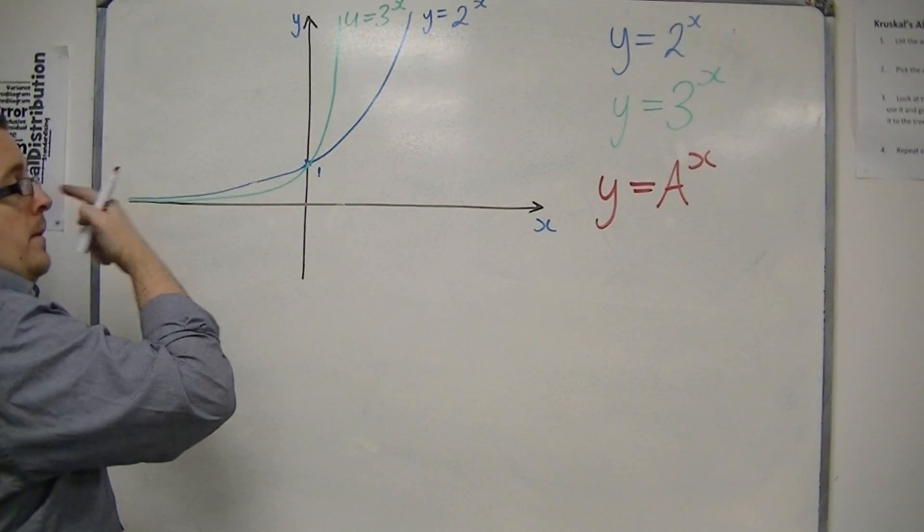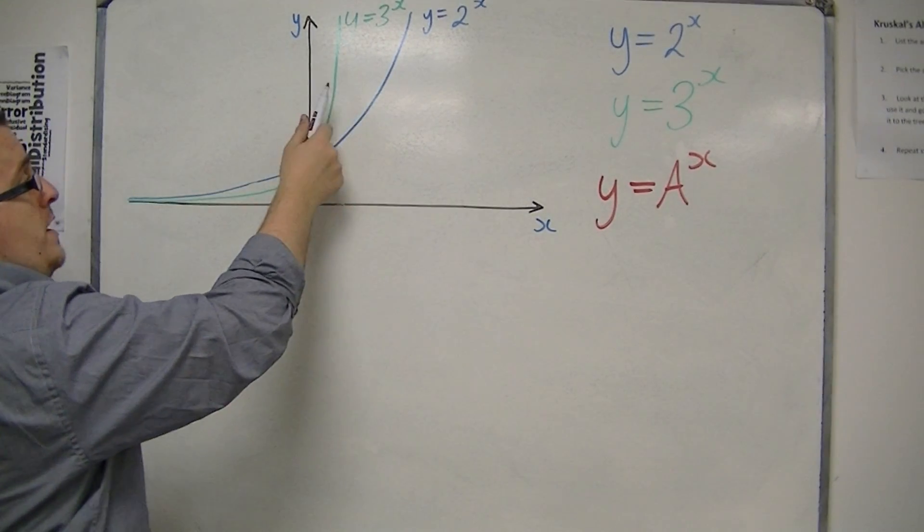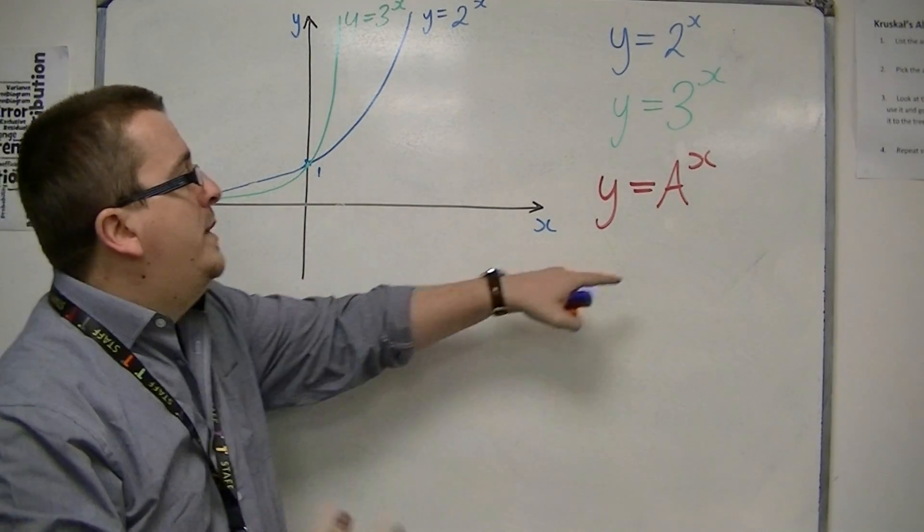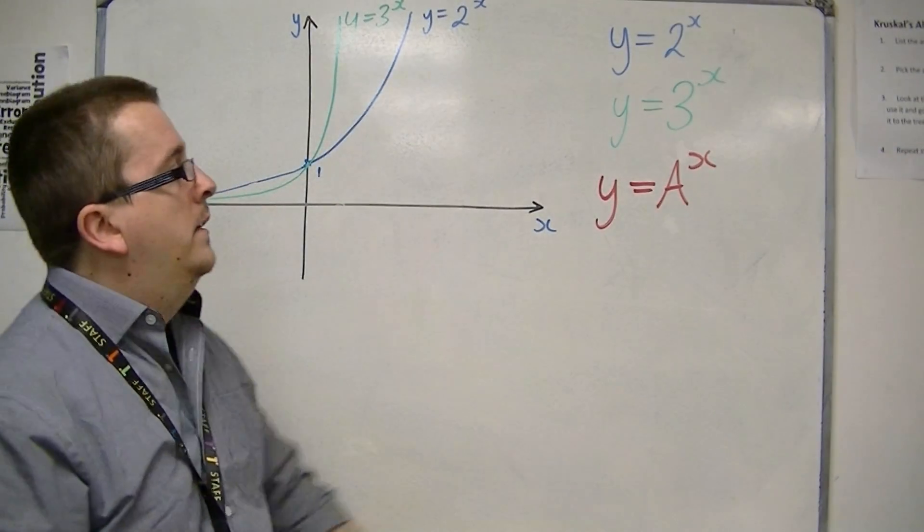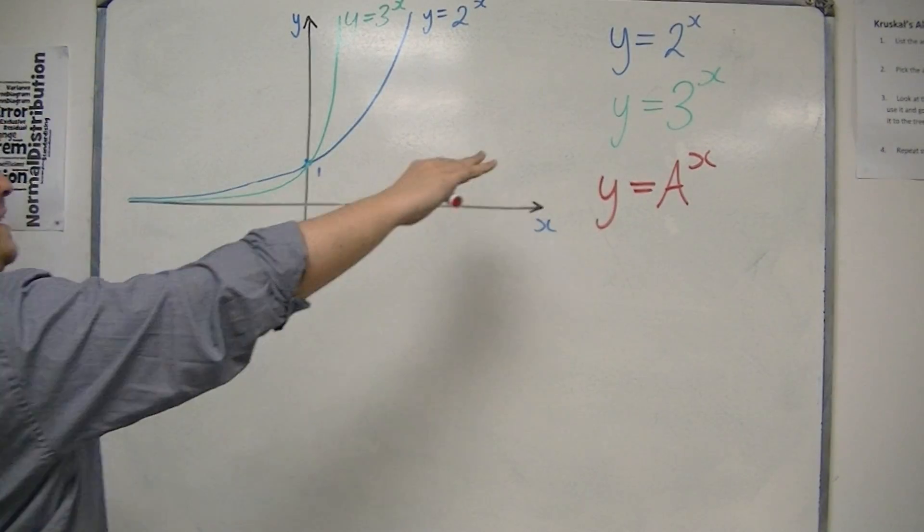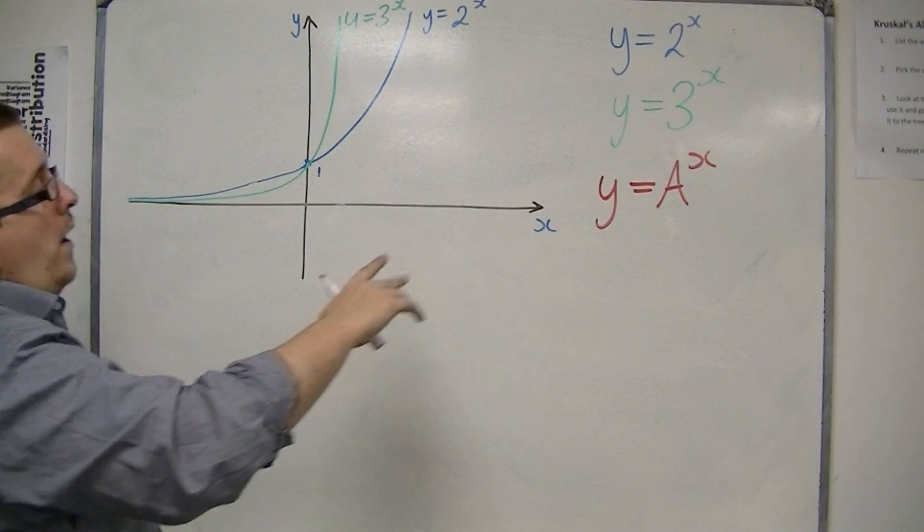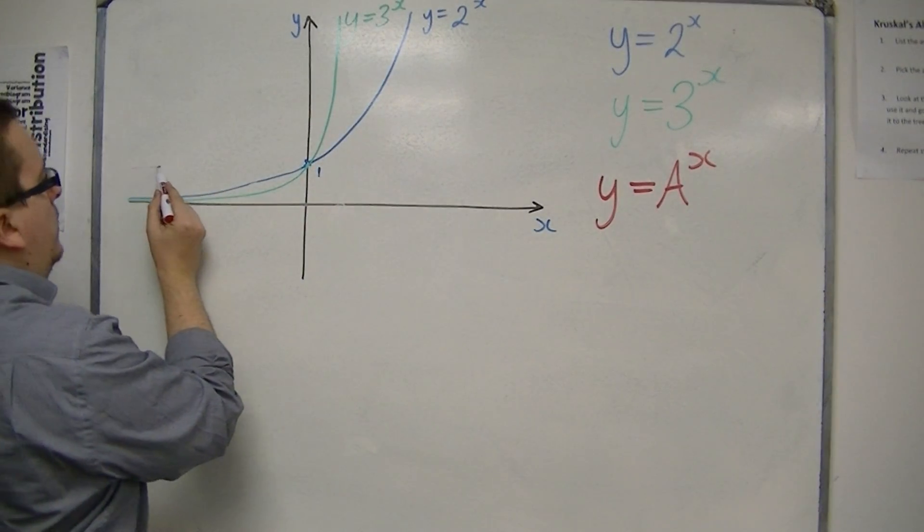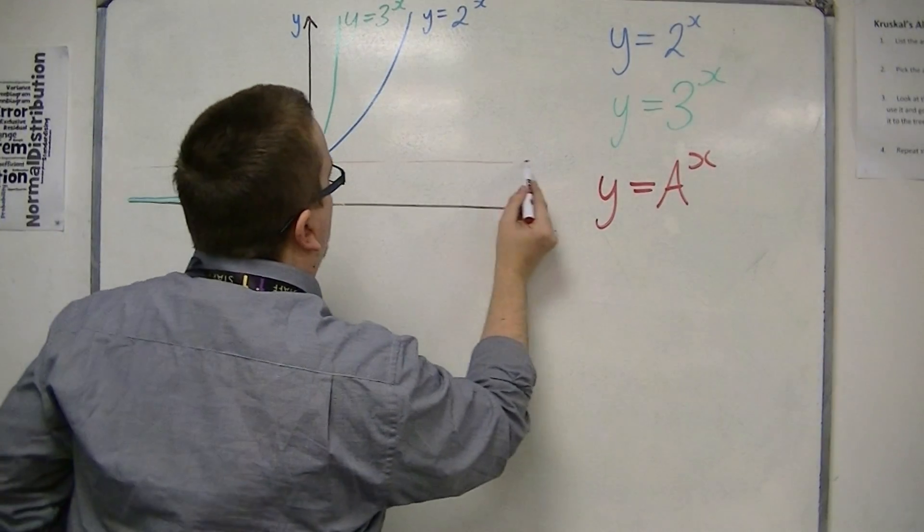But whether it's 2, 3, 4, the curve will be slightly steeper as you increase a, and will become shallower as you decrease a towards 1, because 1 to the power of x would just be a horizontal line.